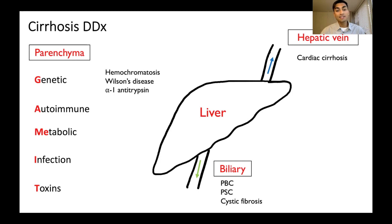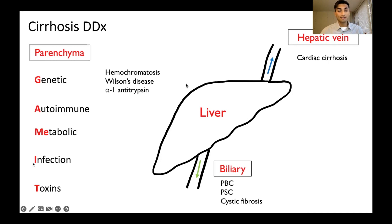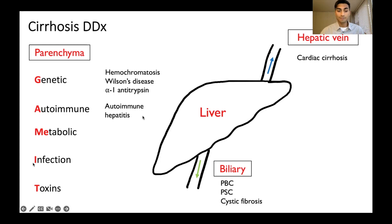In kids, there are a couple of other genetic causes to think about, like type 4 glycogen storage disease and tyrosinemia. But for simplicity, I just focused on those three main ones. Next, A is for autoimmune — that's autoimmune hepatitis, where your own immune system attacks the liver.